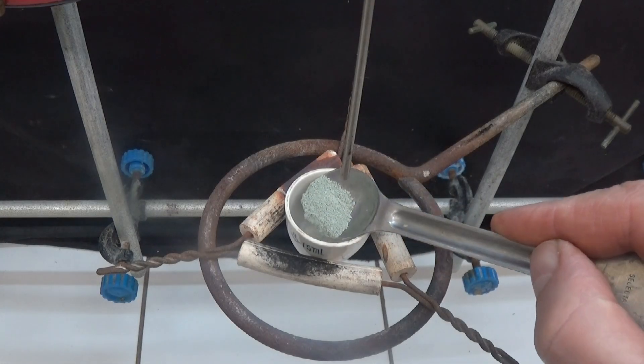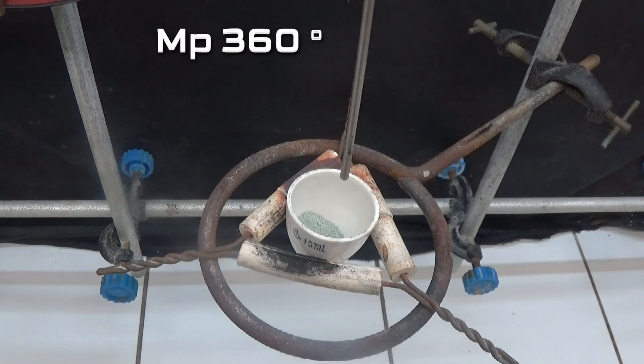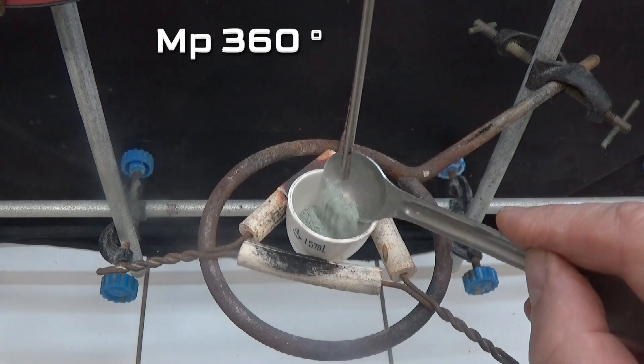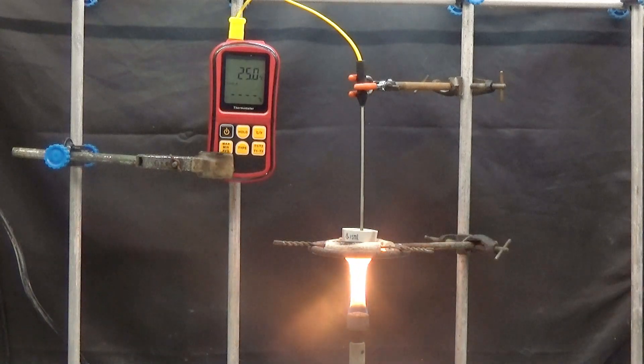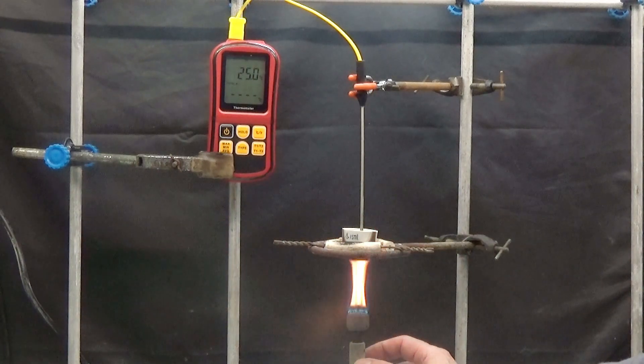The melting point of acridone is 360 degrees. In my laboratory I do not have any method to determine such a high melting point. I have set up a rudimentary apparatus to melt the acridone and with a digital thermometer I measure the temperature.